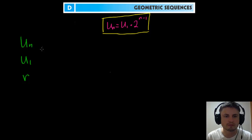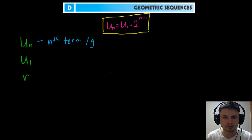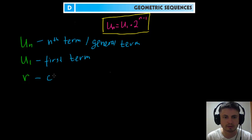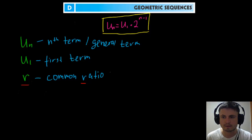The vocabulary you need to know for geometric sequences is similar to arithmetic sequences. Un is known as the nth term or general term — if a test asks for the general term or nth term, that's what they mean. U1 is known as the first term, and r is known as the common ratio — that's why it's r, because it's a ratio.